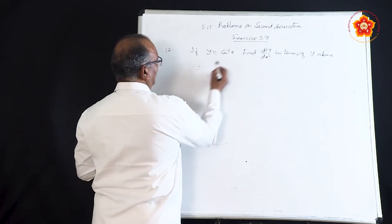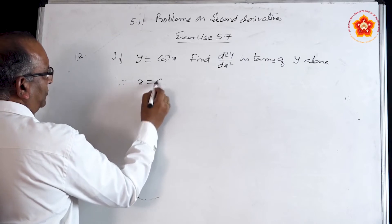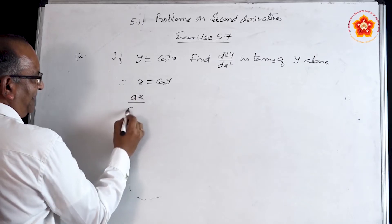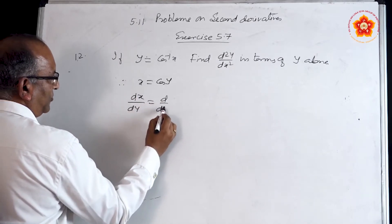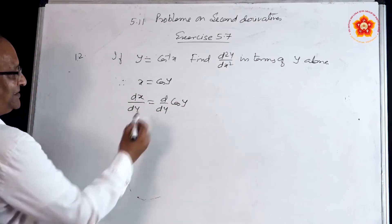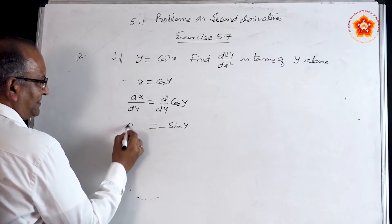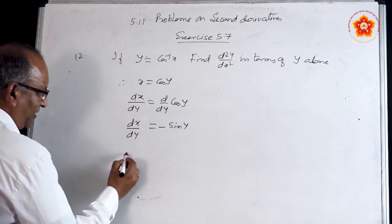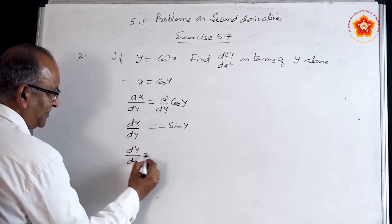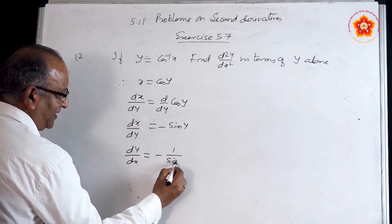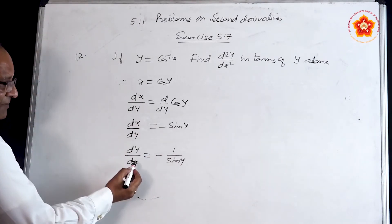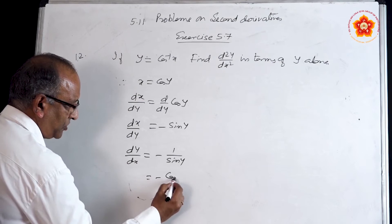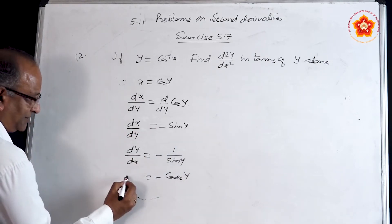We can write cos⁻¹ brought to the other side: x = cos y. Now find the derivative with respect to y. So dx/dy = d/dy of cos y = −sin y. This is dx/dy. Now take the reciprocal: dy/dx = −1/sin y, which can also be written as −cosec y. This is dy/dx.